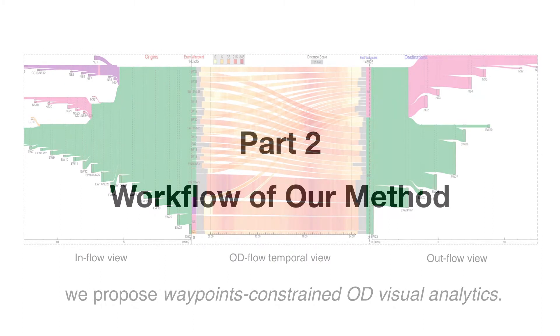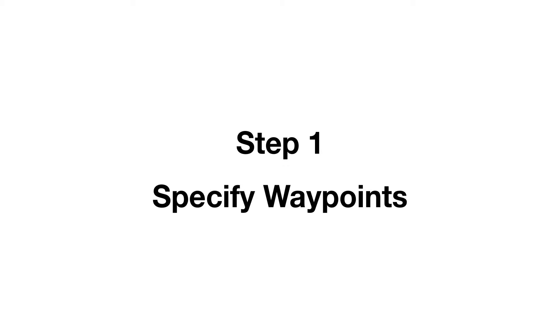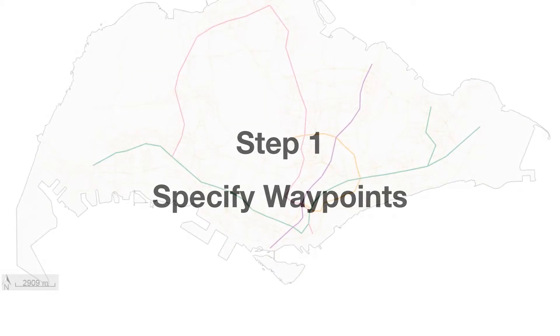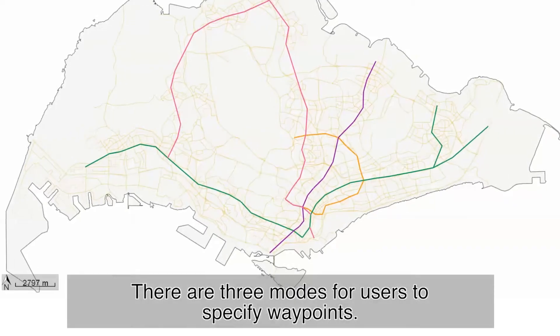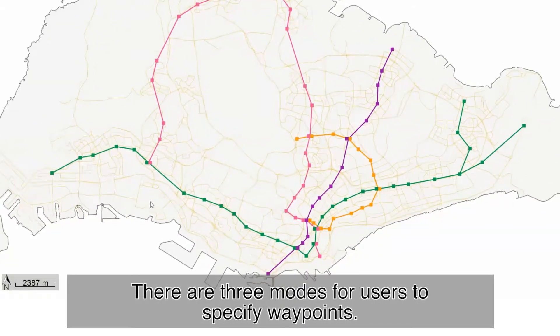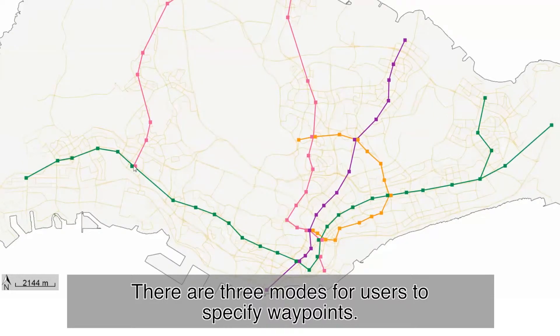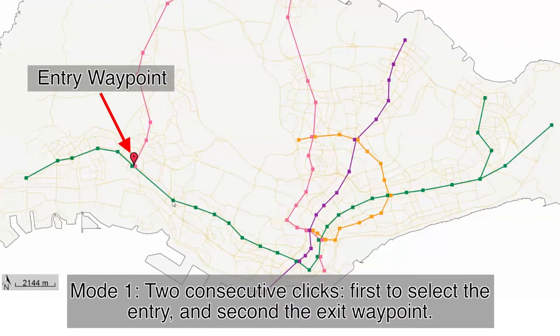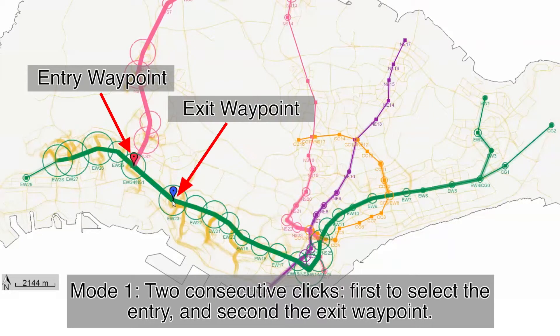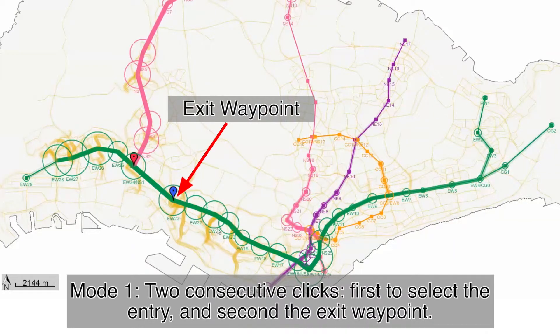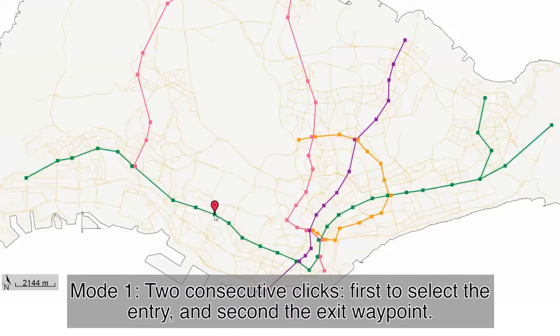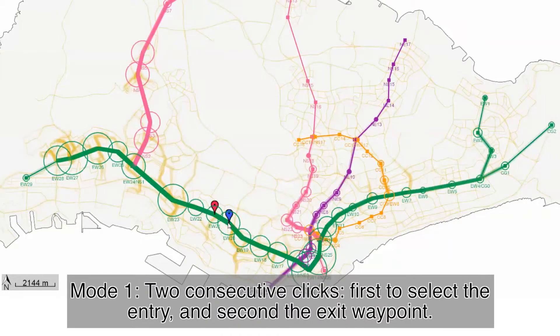Part 2: Workflow of our method. Step 1: Specify Waypoints. There are three modes for users to specify waypoints. Mode 1: Two consecutive clicks — first to select the entry, and second the exit waypoint.